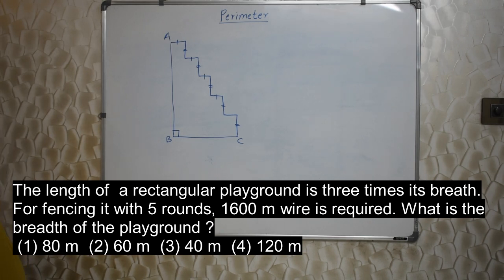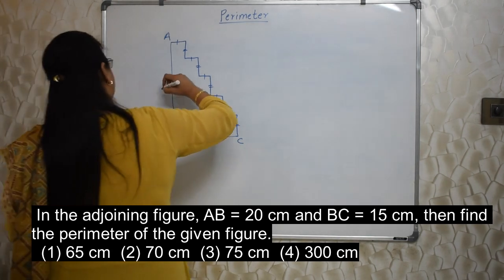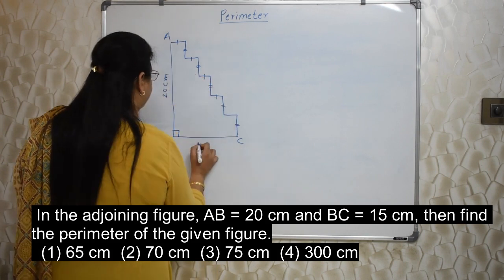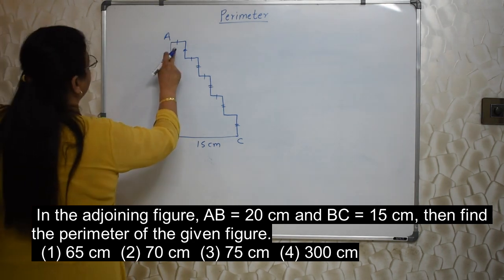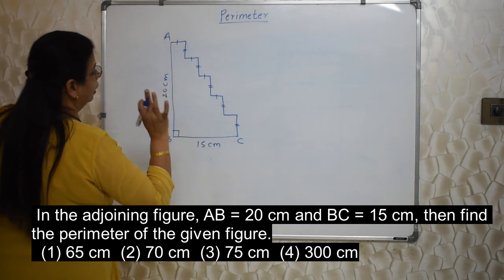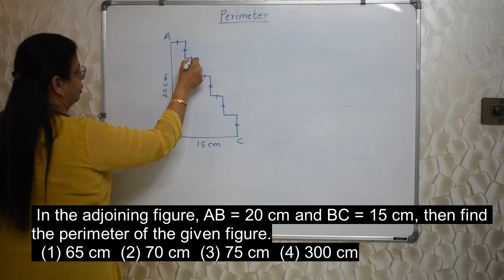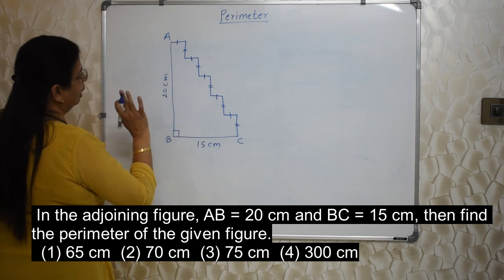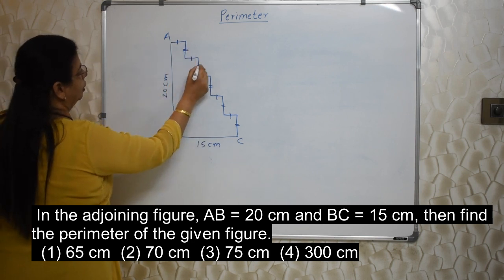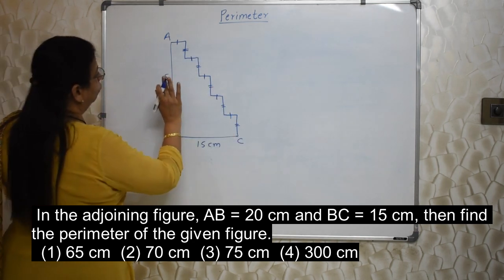In the adjoining figure, AB is equal to 20 centimetre and BC is equal to 15 centimetre. Then find the perimeter of the given figure. AB is 20 centimetre. And BC is 15 centimetre. Here what is important is these small small lines which you can see. They are very important. They are the deciding factors. This one line on the slipping lines here means all these lines are identical. They are same in length. And these 2, 2 lines here, this, this, this, this and this, they are equal in length.